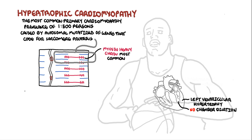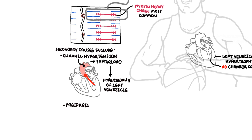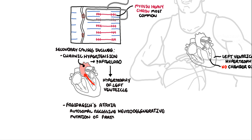Secondary causes of hypertrophic cardiomyopathy include chronic hypertension, which results in an increase in afterload and thus the ventricles thicken as an adaptive mechanism. Other causes include aortic stenosis, Friedreich's ataxia — an autosomal recessive neurodegenerative mutation of the frataxin gene — and Fabry's disease, a genetic disease with a deficiency of an enzyme called alpha-galactosidase A.